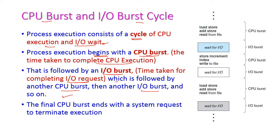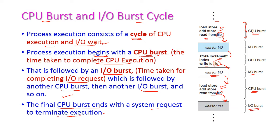Finally, the CPU burst ends with a system request to terminate execution. Looking at the diagram: the process begins with a CPU burst — load, add, store, and read from file. 'Read from file' is IO, so it will wait for IO to complete. After that, a CPU burst starts: store, increment index, write to file. 'Write to file' is again IO burst. After completing the write, CPU burst starts again — load, store, add, store, and read from file — returning to IO burst. This cycle repeats until the process completes.